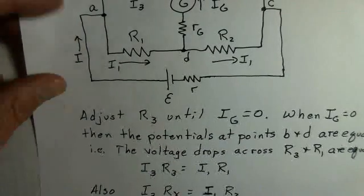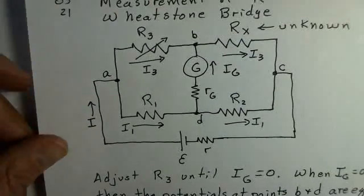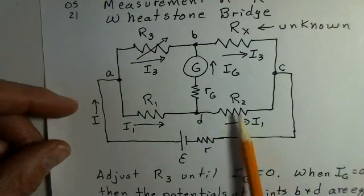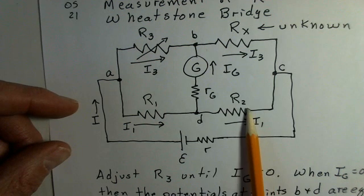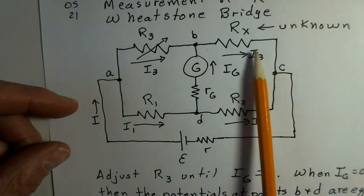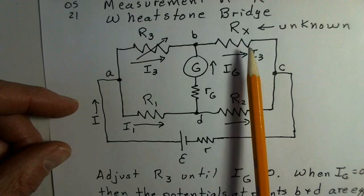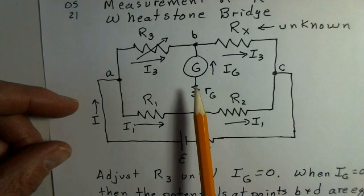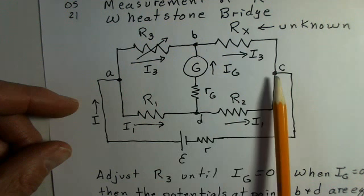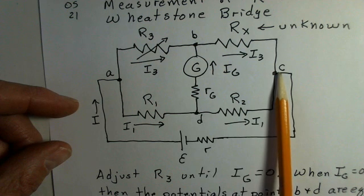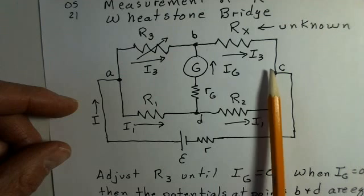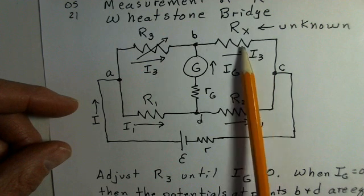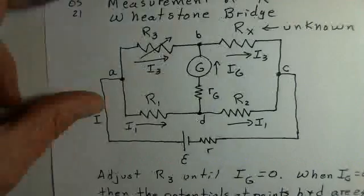On the back half of the circuit, again, we have a common potential at point C. The potential drop I1, R2 is the same as the potential drop I3 times R sub X. Again, these potentials are the same at B and D. We drop down to the same potential whether we consider going through R2 or go through Rx. And potential drop is calculated with current in the resistor multiplied by the resistance value.